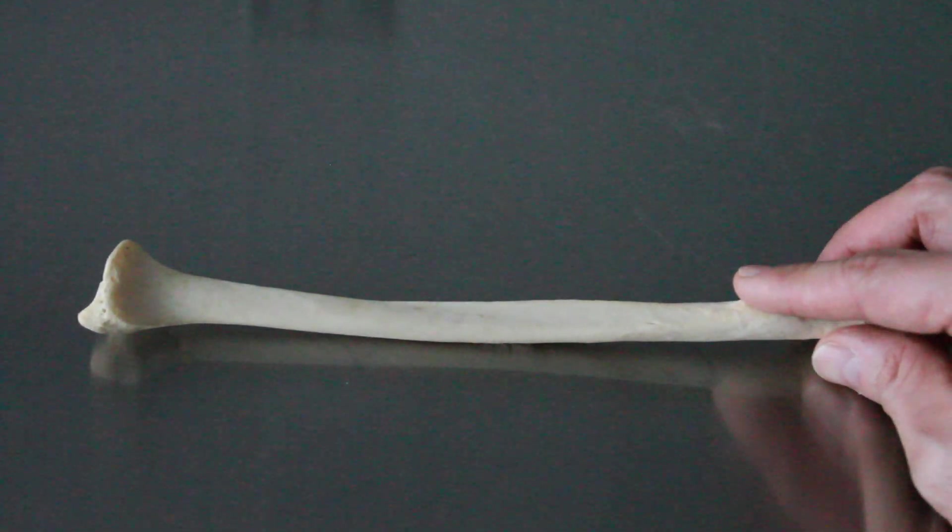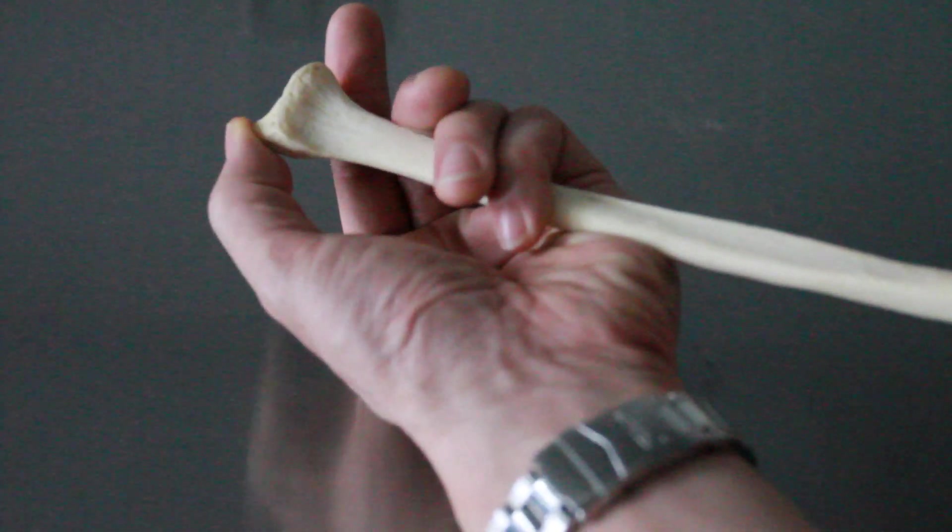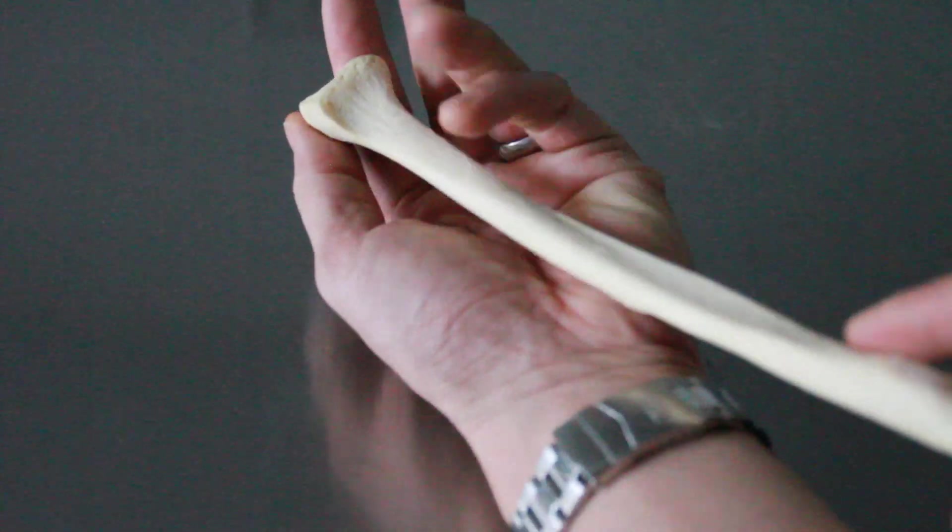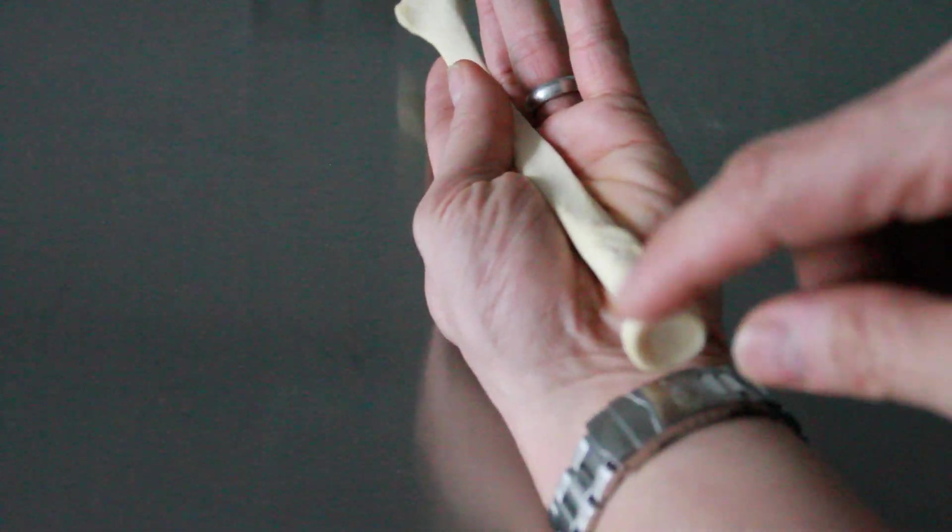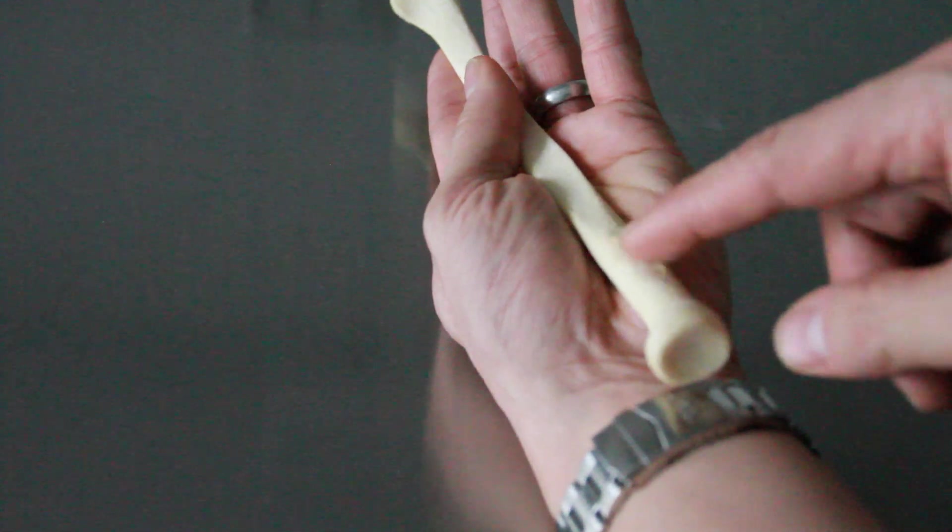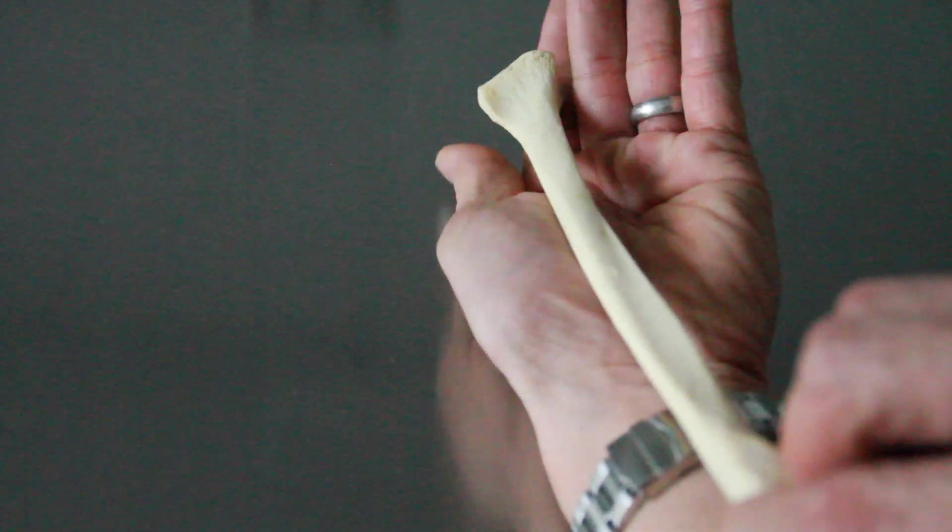So this is my left radius. In order to keep the styloid process of the radius lateral, and keeping the head proximal, and then the radial tuberosity anterior, I have to keep it on my left hand.